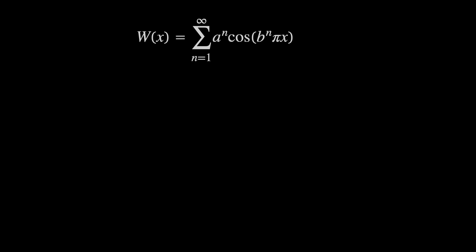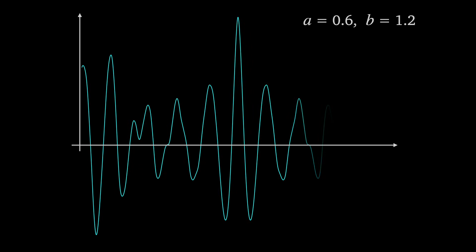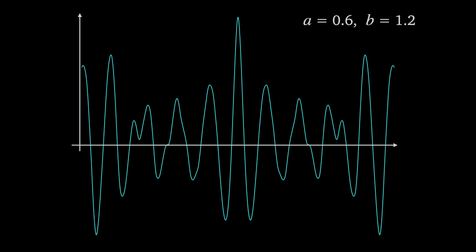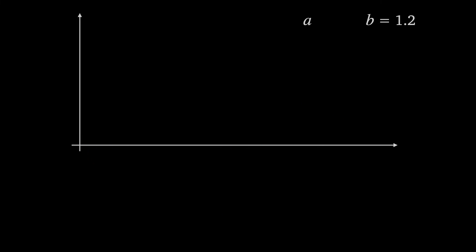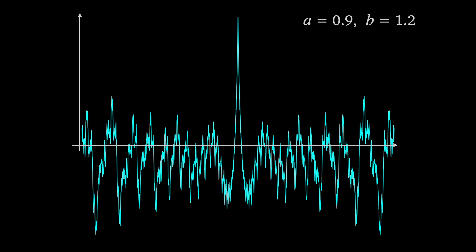So we've shown the function is continuous — but what about differentiability? To get some intuition, nothing is stopping us from just taking the derivative. Using the M-test again, the derivative only converges if a times b to the power n is less than 1, which means a times b is less than 1. This isn't proof that the Weierstrass function is nowhere differentiable when ab > 1, but it does happen to be true. For example, choosing a = 0.6 and b = 1.2 gives a smooth function, but increasing a to 0.9 — where ab becomes greater than 1 — takes us back to something non-differentiable.